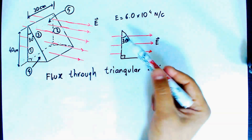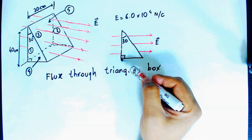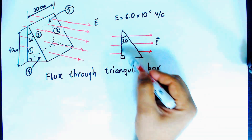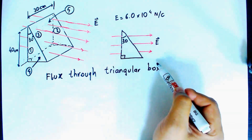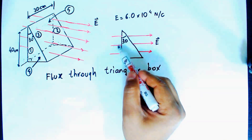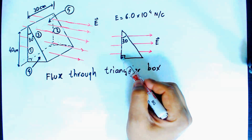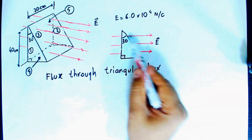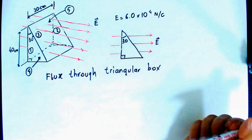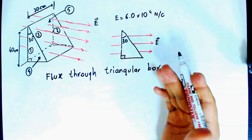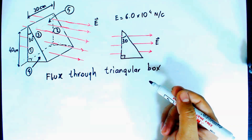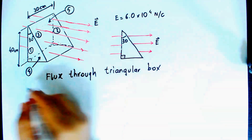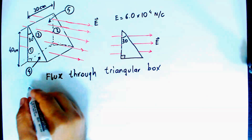From the side view cross-section, you can see the electric field lines coming parallel to the bottom, crossing perpendicular to face three, and going out from the slanted face. Since we have five different faces, we will calculate five different fluxes.